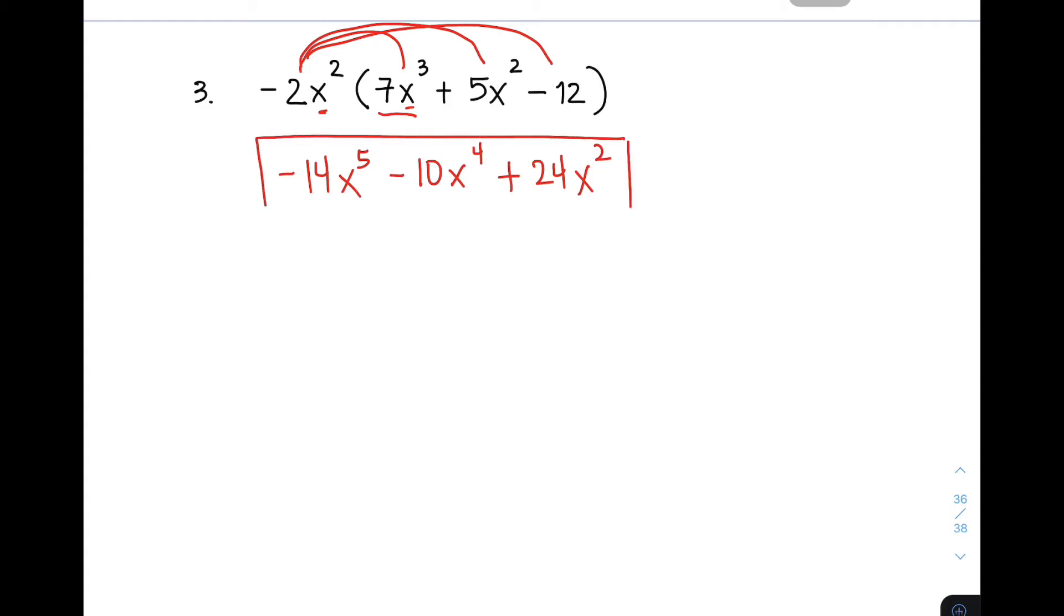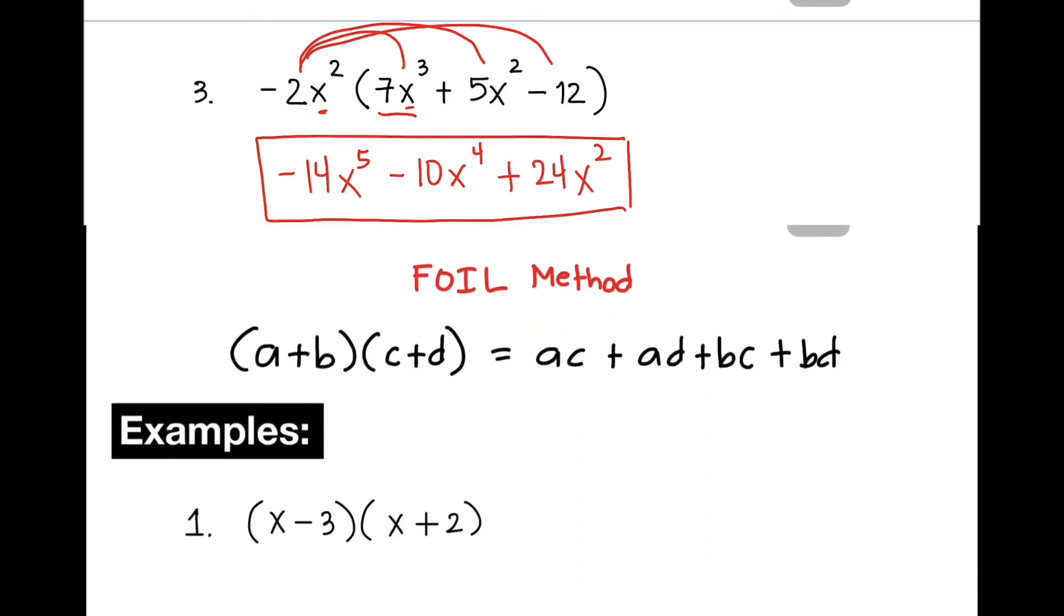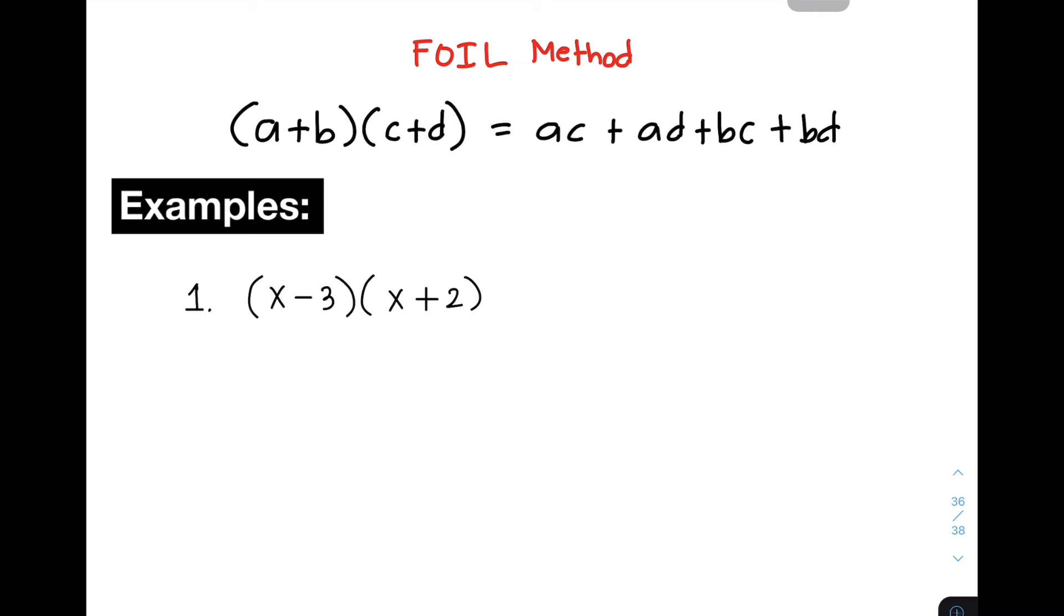Now for item number 3, this is the answer for it. You have negative 14X to the 5th power minus 10X to the 4th power plus 24X squared. Now let's move on with the next method that I will teach you on how to multiply polynomials.